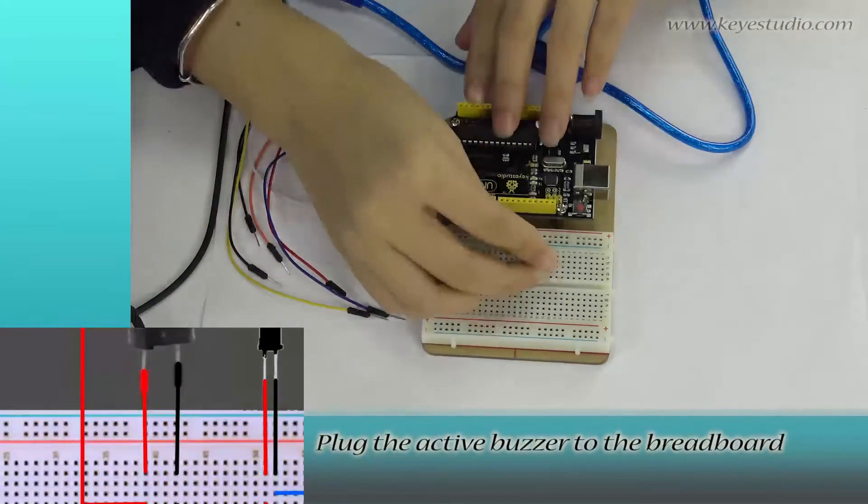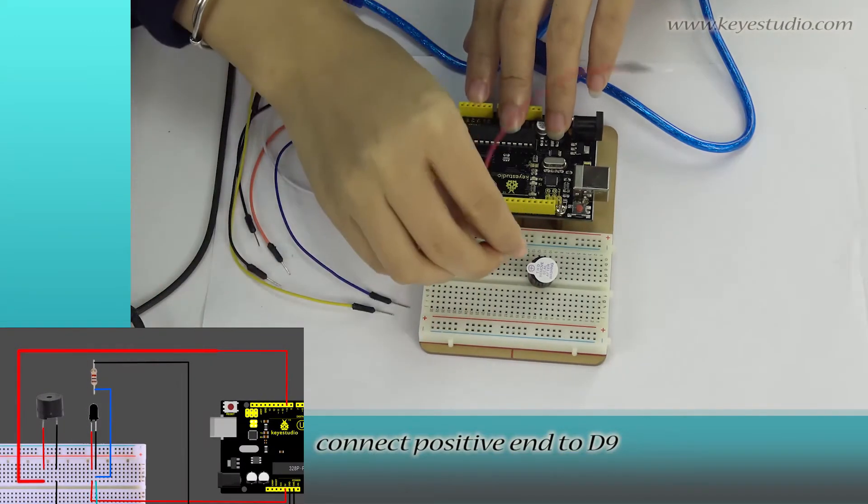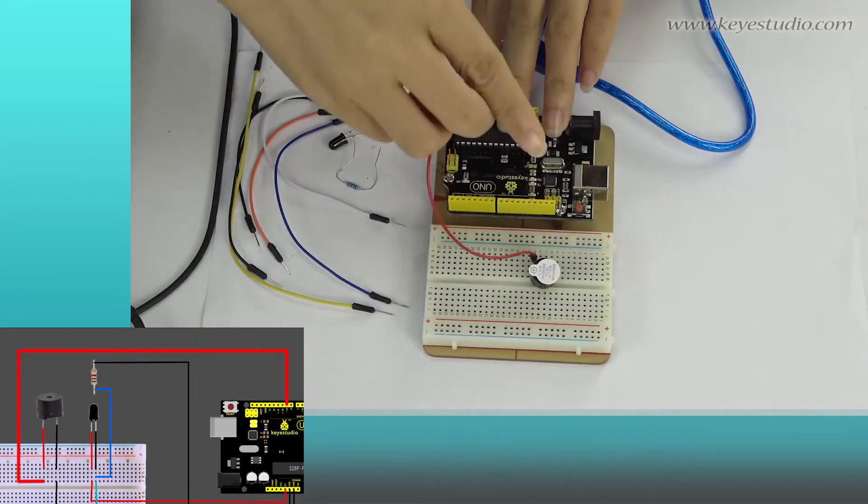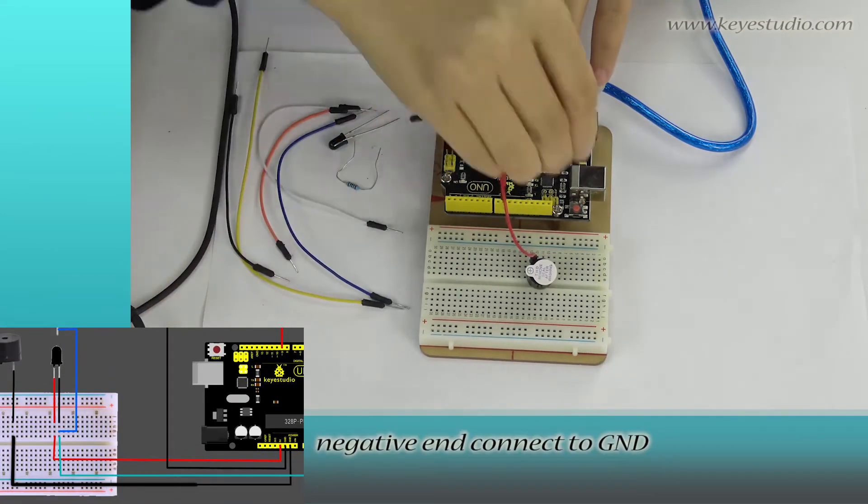Plug the active buzzer to the breadboard. Connect positive end to D9. Negative end connect to ground.